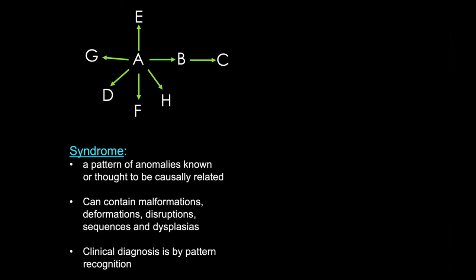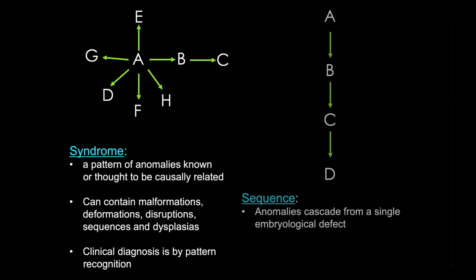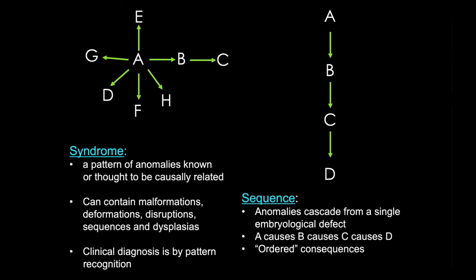A sequence, on the other hand, arises from a single embryological defect, such that A causes B, which leads to C and D. Sequences have ordered consequences — if you never have A, then you don't get B. These are obligate associations.